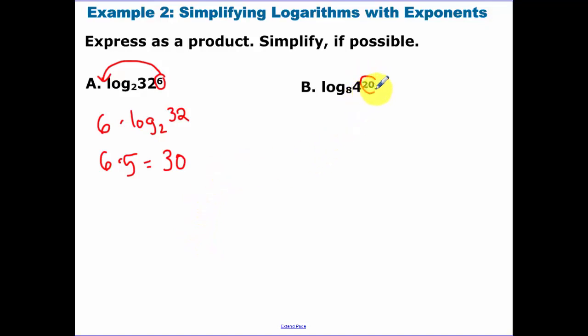Same thing. I don't want to do 4 to the 20th. But if I bring down the 20, now I just need to evaluate log base 8 of 4. Now log base 8 of 4 is a little bit challenging. 8 to what power gets me 4?